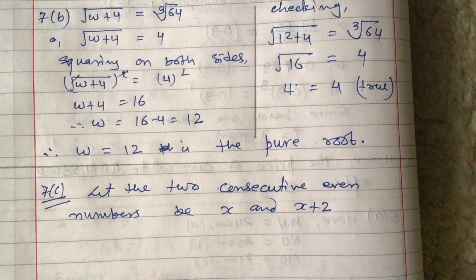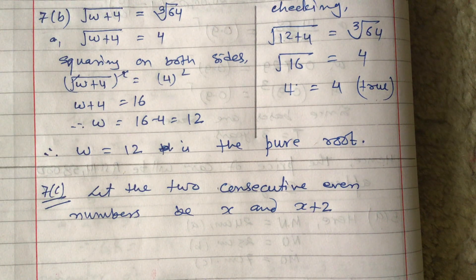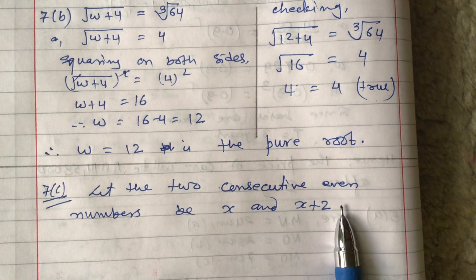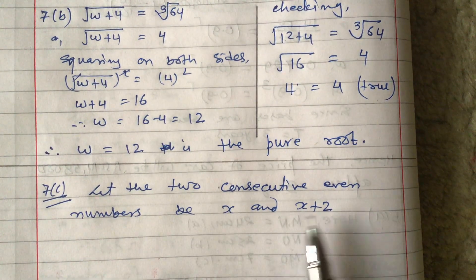Whether it is even numbers or odd numbers, the difference will always be two. So you can suppose x and x+2, or x and x-2.